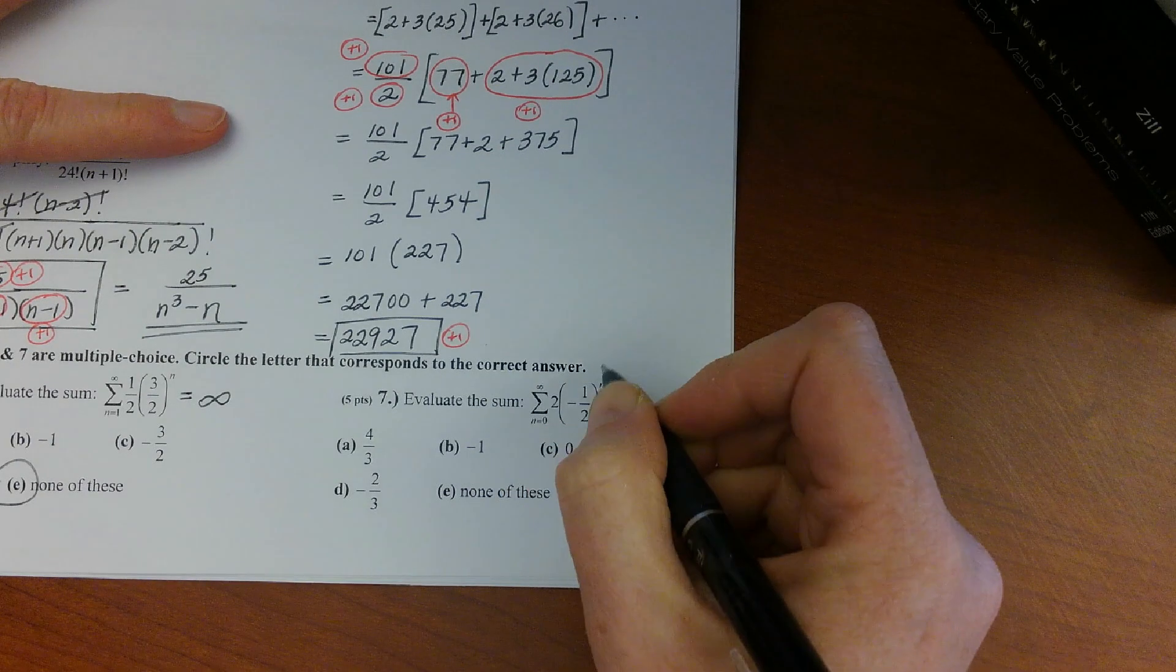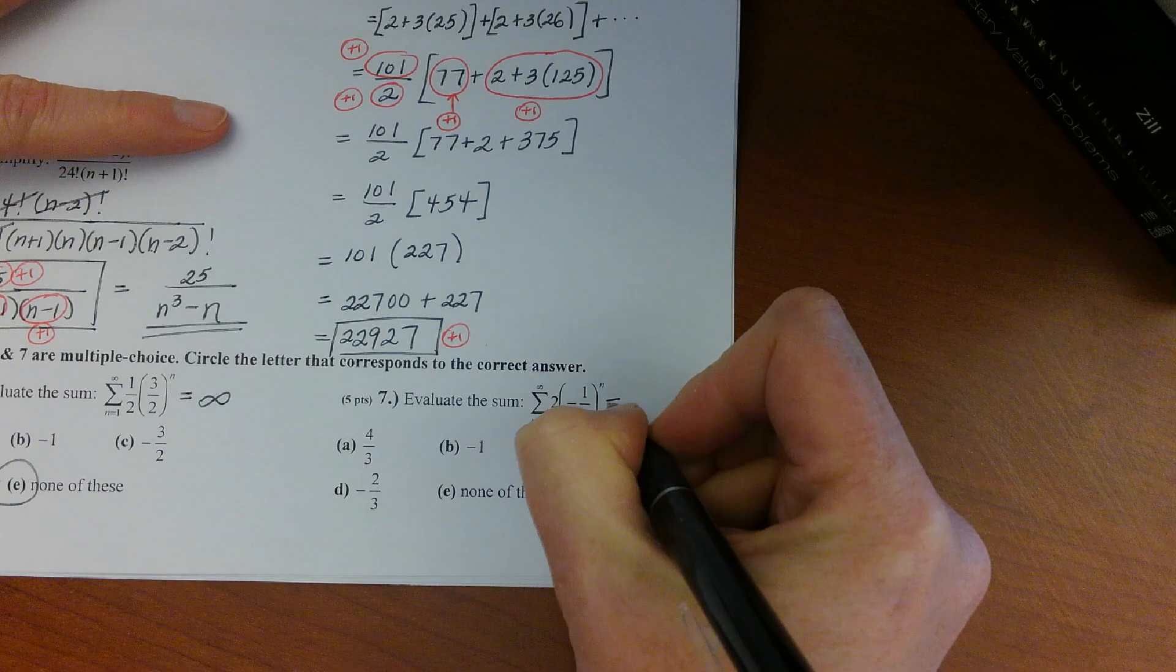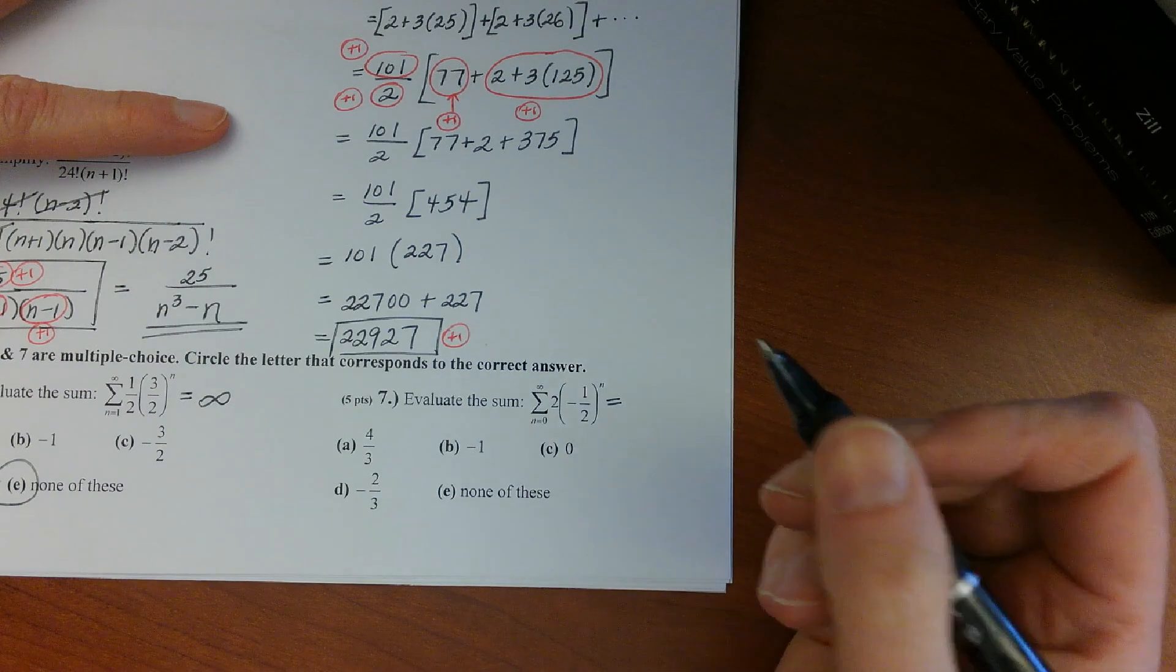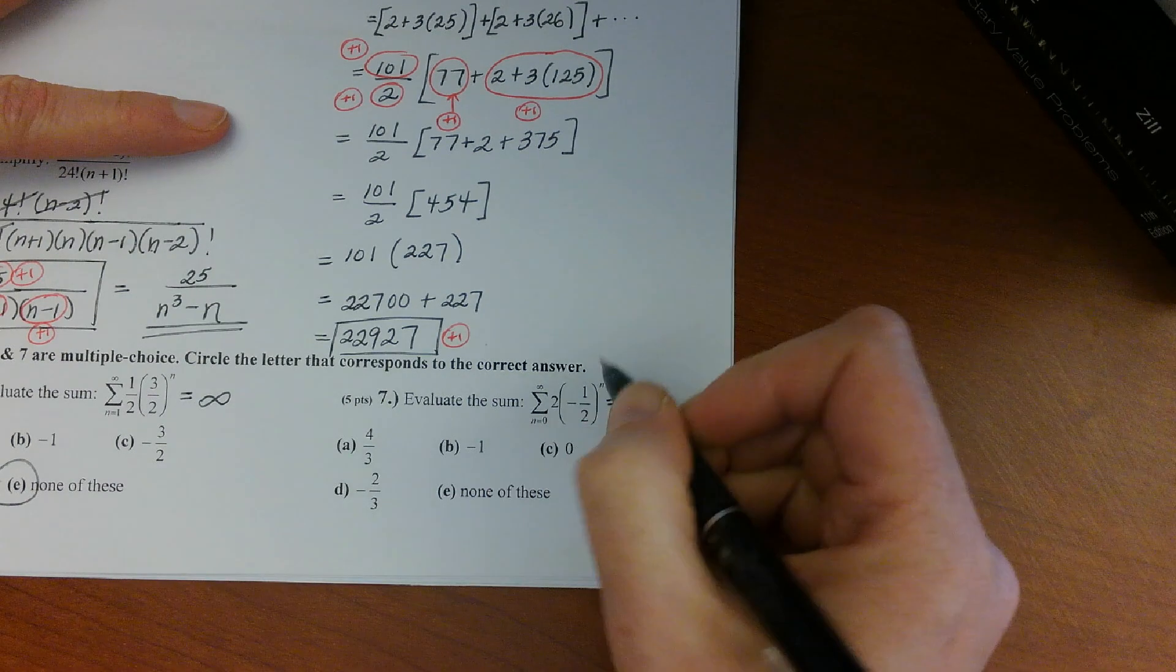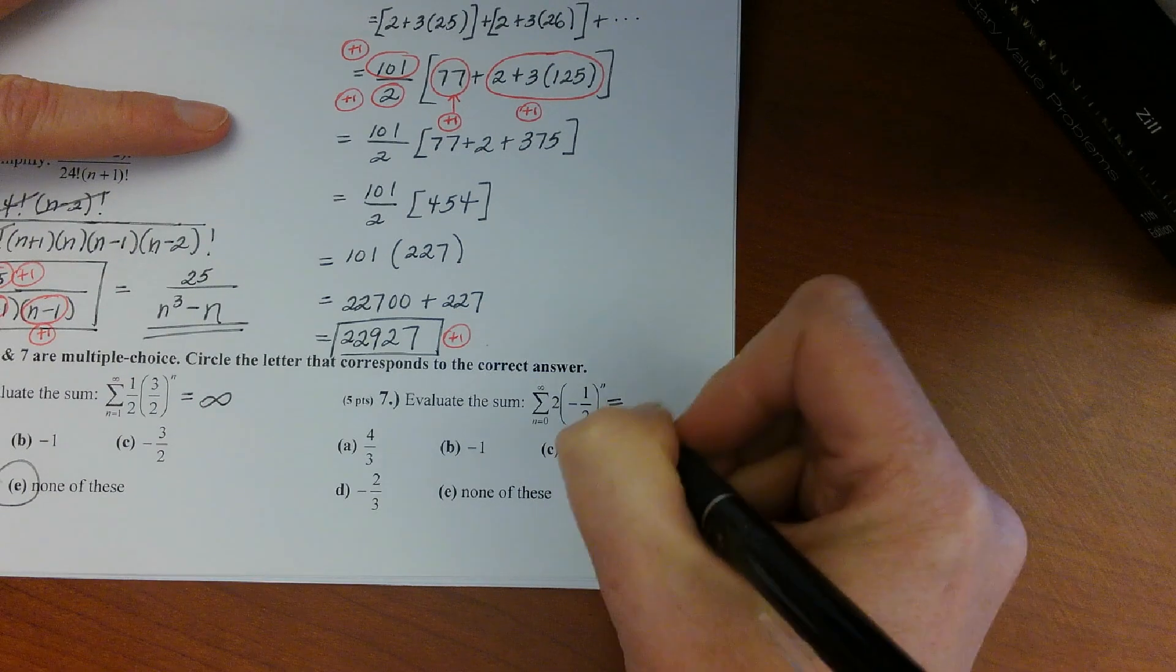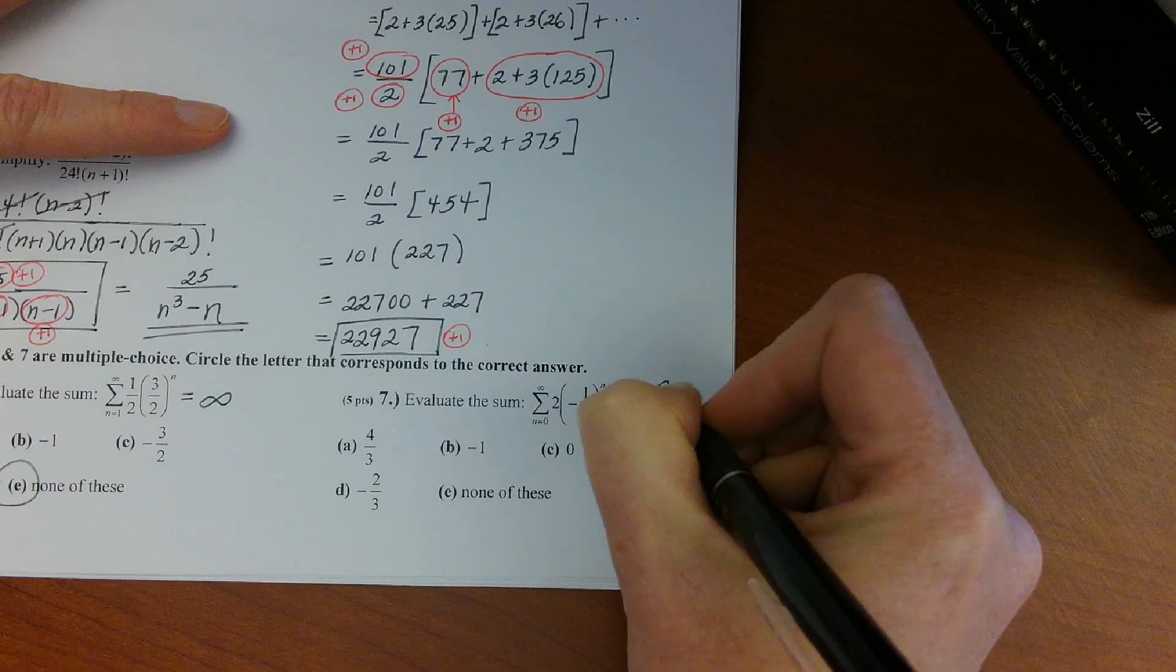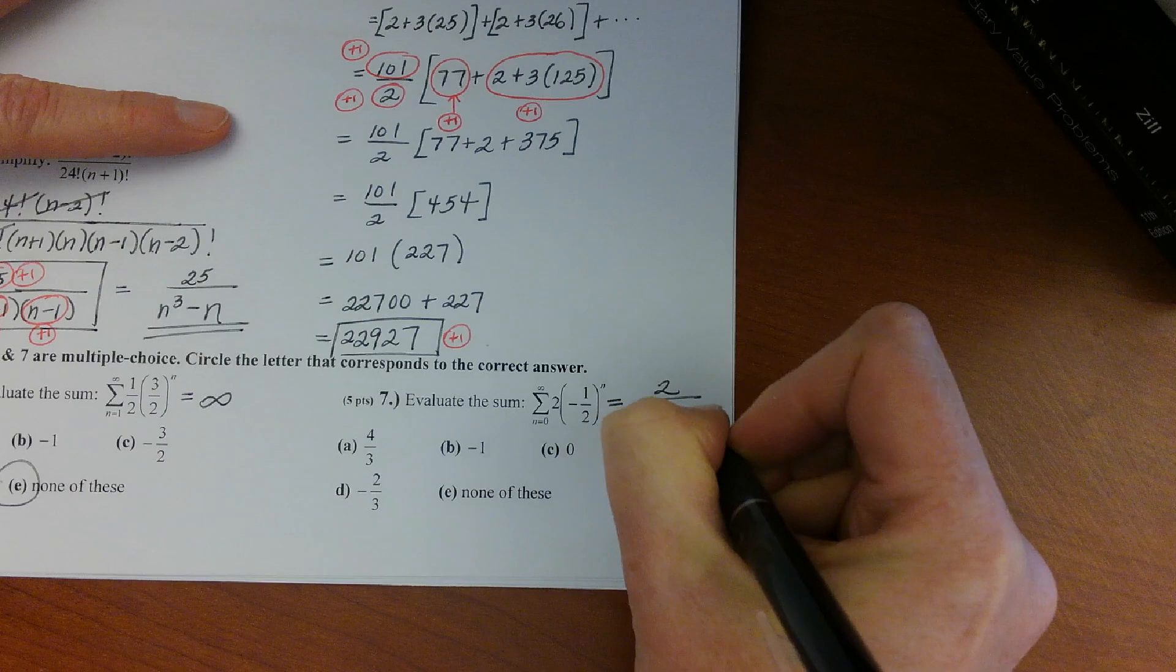For problem seven, evaluating the sum, this time your common ratio is negative one half. So your terms themselves would be approaching a value of zero very quickly, so you could actually get an infinite sum for this one. So this would add up to your first term, would be 2 over 1 minus your common ratio.